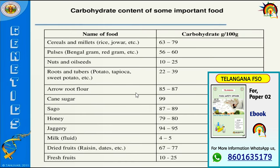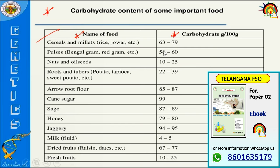Looking at the nutritional value or carbohydrate content of some important foods: cereals like rice and jowar consist of 63 to 79 grams of carbohydrate per 100 grams. Pulses like gram and red gram consist of 56 to 60 grams per 100 grams. This chart shows the name of the food and how much carbohydrate is present.